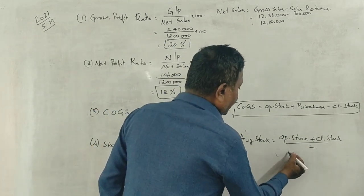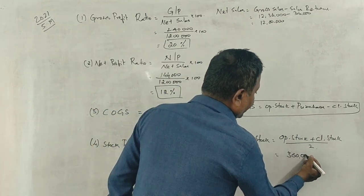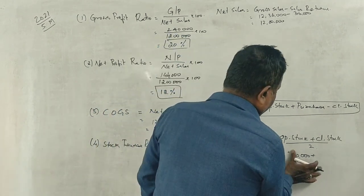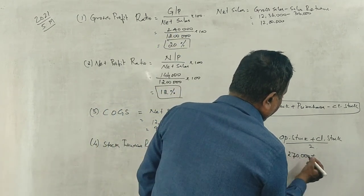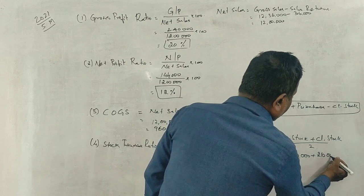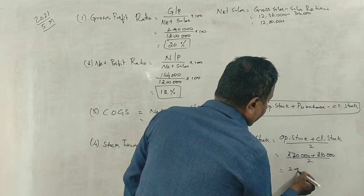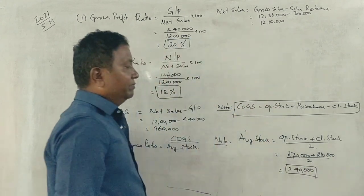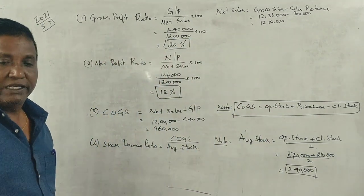Average Stock: Opening Stock is 2,70,000, Closing Stock is 2,10,000. Add them and divide by 2. That gives us 2,40,000. Correct?